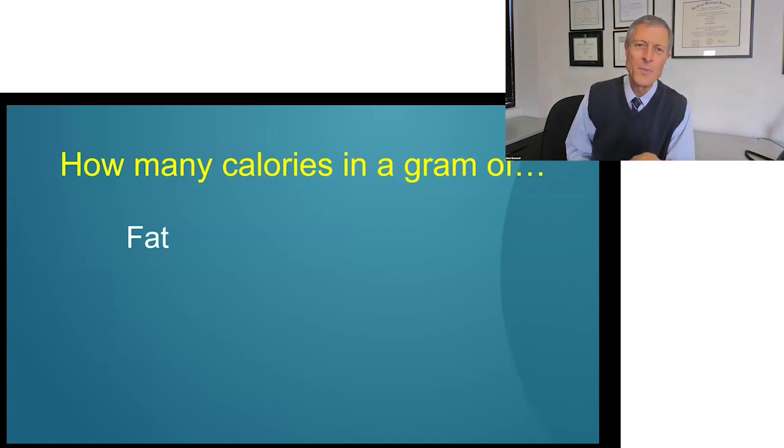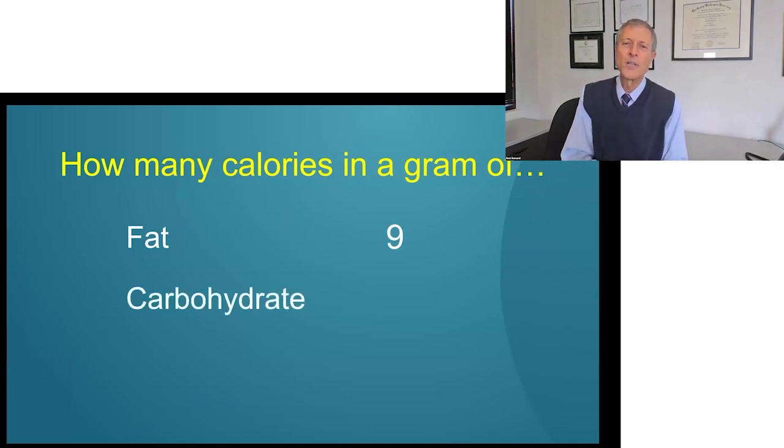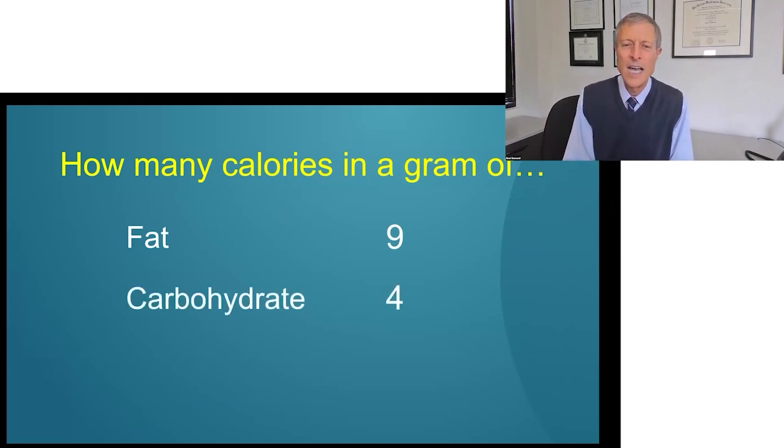Now, you know this already. How many calories are there in a gram of fat? Nine. That's right. How many calories are there in a gram of carbohydrate? Well, there's only four. Fiber, about zero to two, depending on the type, but very low or more or less no calories in fiber for all practical purposes.